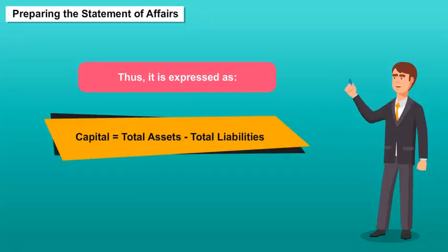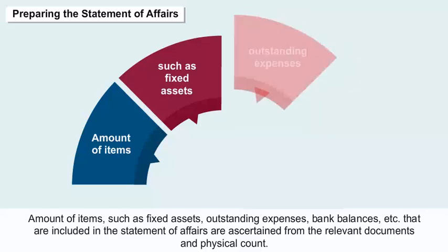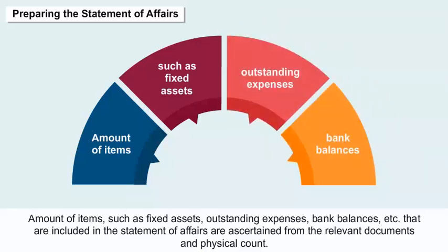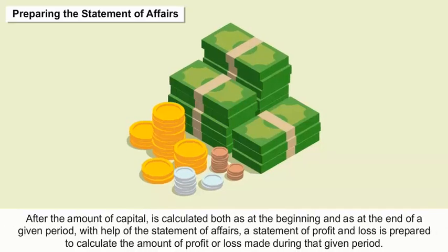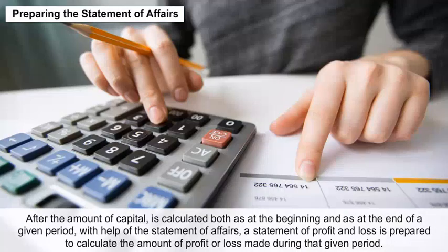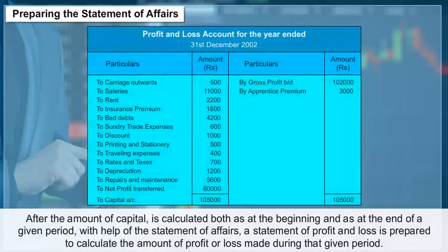The difference between total assets and total liabilities is considered the amount of capital, expressed as: Capital = Total Assets − Total Liabilities. Amounts of items such as fixed assets, outstanding expenses, and bank balances included in the statement of affairs are ascertained from relevant documents and physical count. After calculating capital both at the beginning and end of a period, a statement of profit and loss is prepared to calculate the amount of profit or loss made during that period.